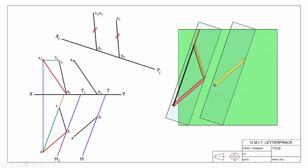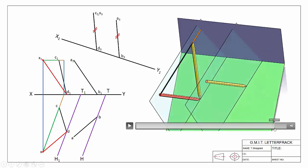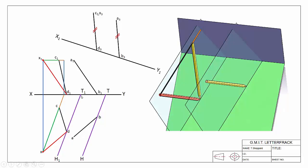Because the vertical trace for the second plane is parallel to the first, we simply locate the corresponding point, go parallel, and we've found our second vertical trace. That's how we locate the view where we see the two skew lines as parallel and how we locate the traces of our two parallel planes.